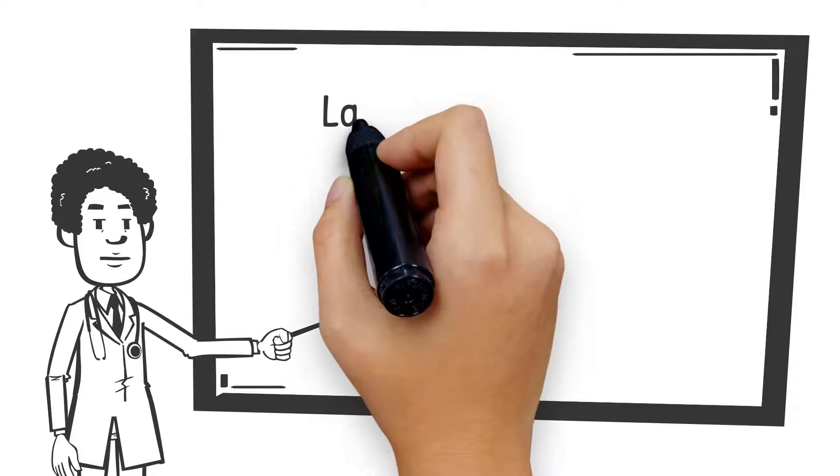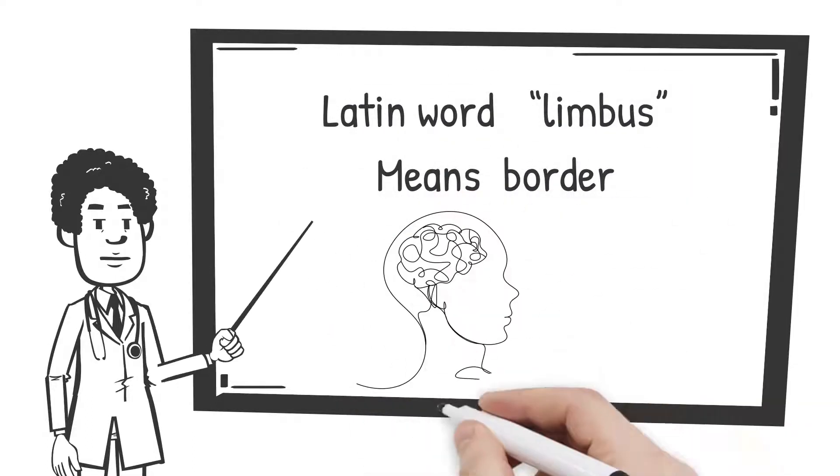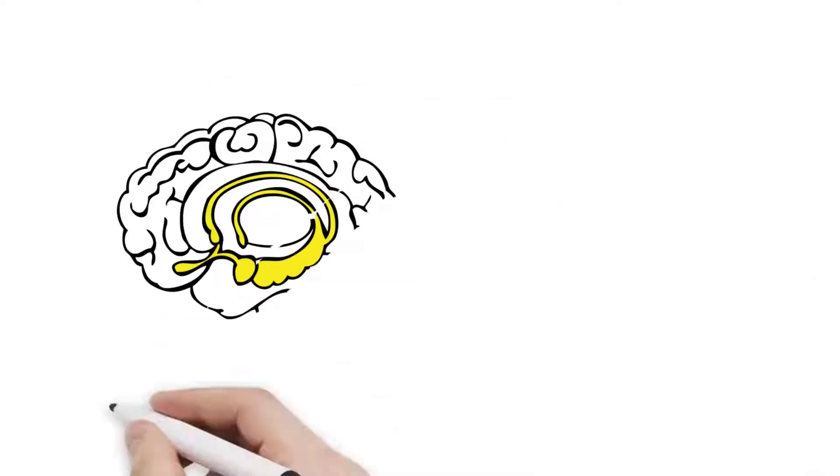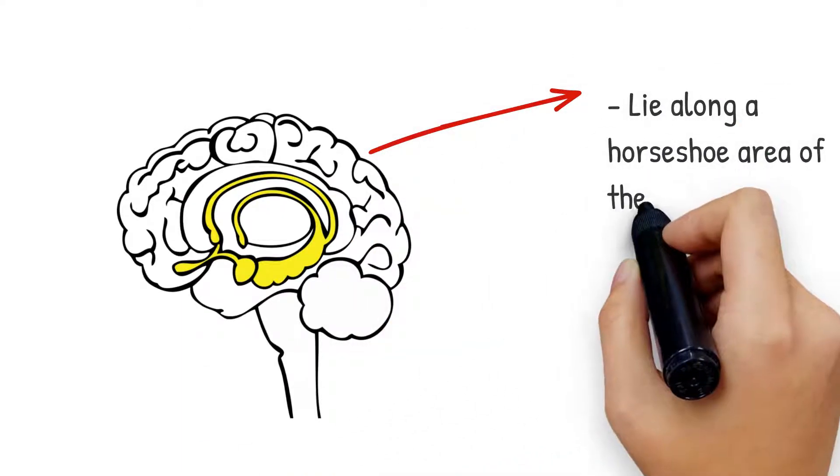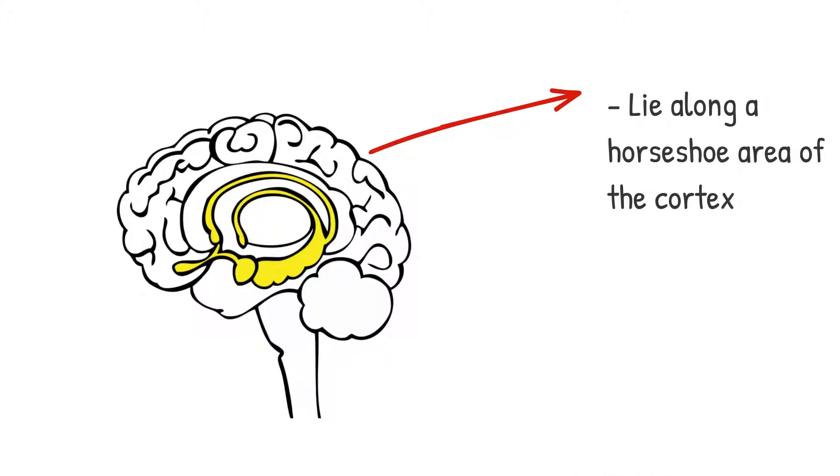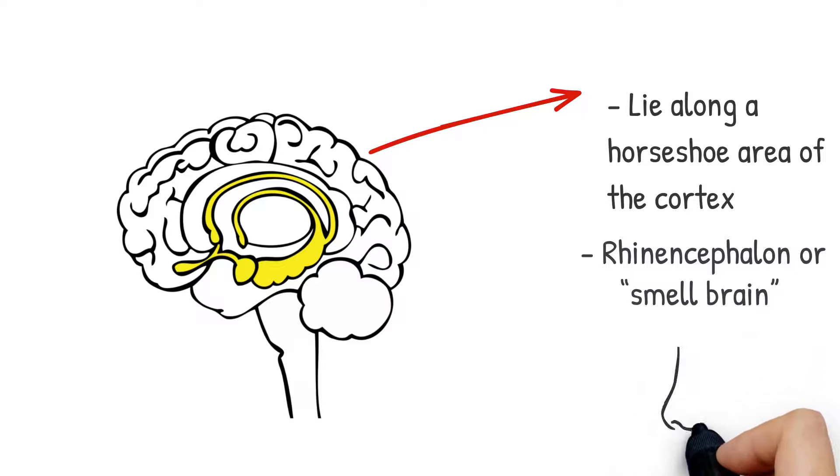Derived from the Latin term limbus, which means border, the brain's limbic system was named as such since the structures that form it lie along a horseshoe area of the cortex. In fact, it was previously called the rhinencephalon or smell brain, since it was thought to be primarily involved with our sense of smell.